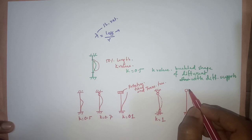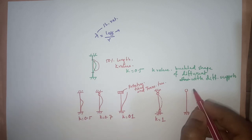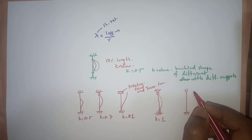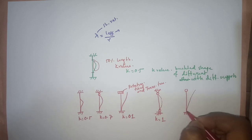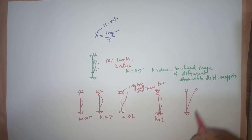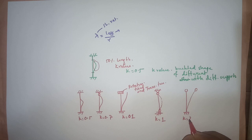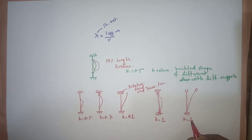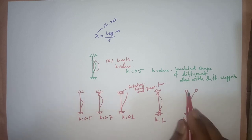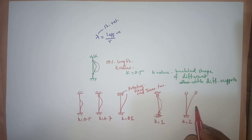If one end is rotation-free and also translation-free, the buckled shape extends beyond the column length, so k is equal to 2. This value of 2 will multiply with the actual length of the column to give the effective length.